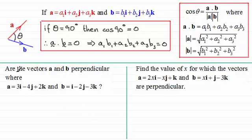Here are the examples. What we've got first of all is, are the vectors a and b perpendicular, where a is defined as 3i - 4j + 2k and b as i - 2j - 3k. Well we start just by working out what a dot b is. If they're perpendicular, we would expect it to come to zero.